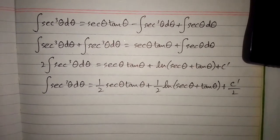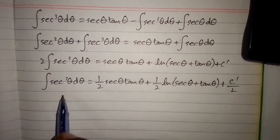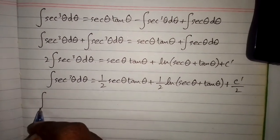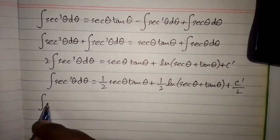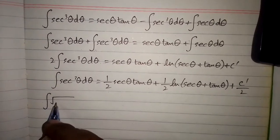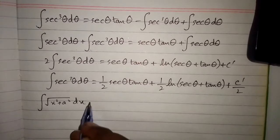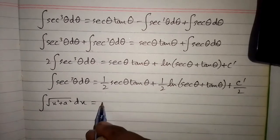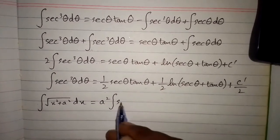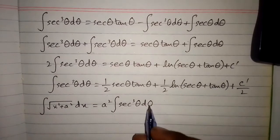Now we have found the value of the integral of sec cubed θ, which equals one half of (sec θ tan θ plus ln|sec θ + tan θ|) plus a constant. So we will now find the value of the integral of √(x²+a²) dx, which equals a squared times the integral of sec cubed θ dθ.